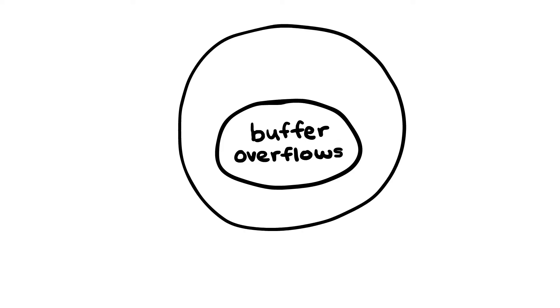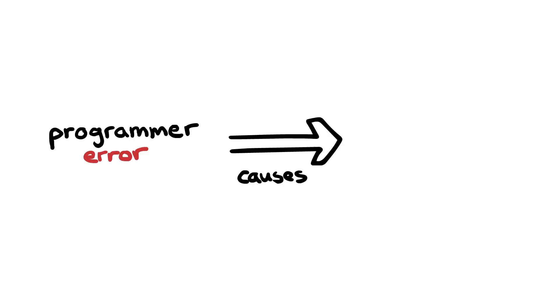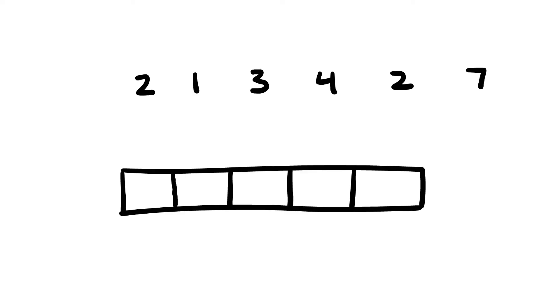Buffer overflows are classified as software bugs. There's a case for arguing that programmer error is the main cause of buffer overflows. After all, no one in their right mind would try to put six numbers in an array that only holds five numbers. Well, it's not as simple as just not making mistakes as a programmer.